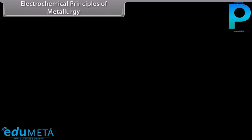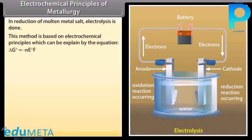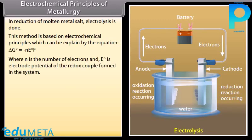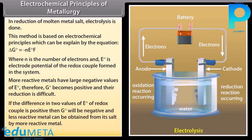Electrochemical principles of metallurgy: In reduction of molten metal salts, electrolysis is done. This method is based on electrochemical principles explained by the equation: ΔG⁰ = −nE⁰F, where n is the number of electrons and E⁰ is the electrode potential of the redox couple. More reactive metals have large negative values of E⁰, so ΔG⁰ becomes positive and their reduction is difficult. If the difference in two E⁰ values is positive, ΔG⁰ will be negative and a less reactive metal can be obtained from its salt using a more reactive metal.